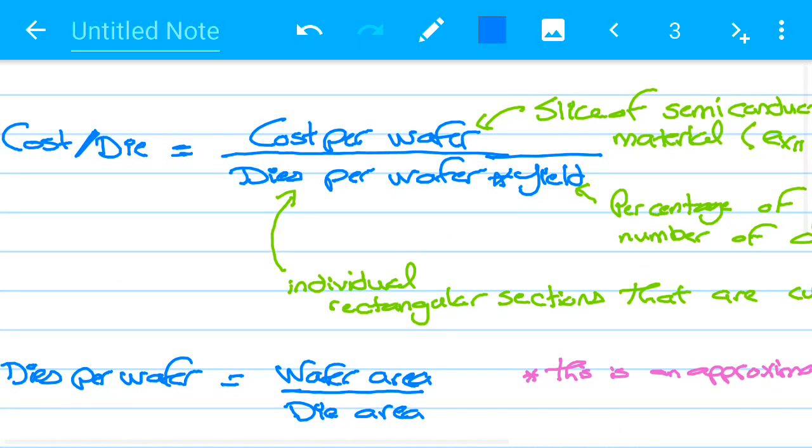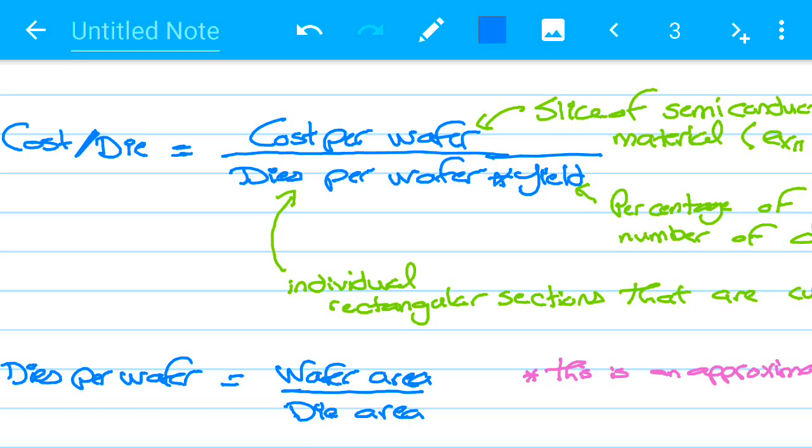Recapping. Cost per wafer over dies per wafer times the percentage of the good dies. Makes sense, right?